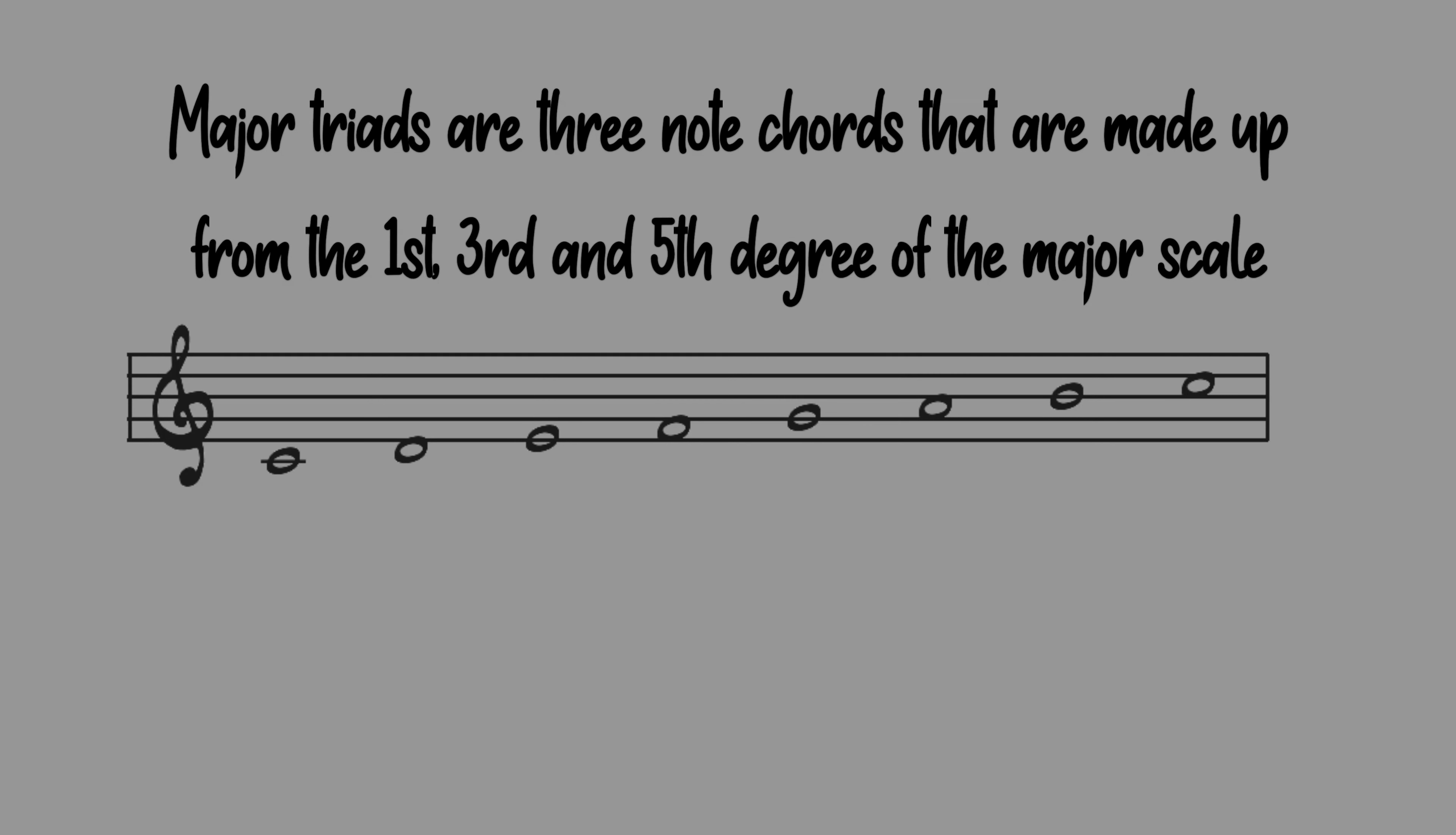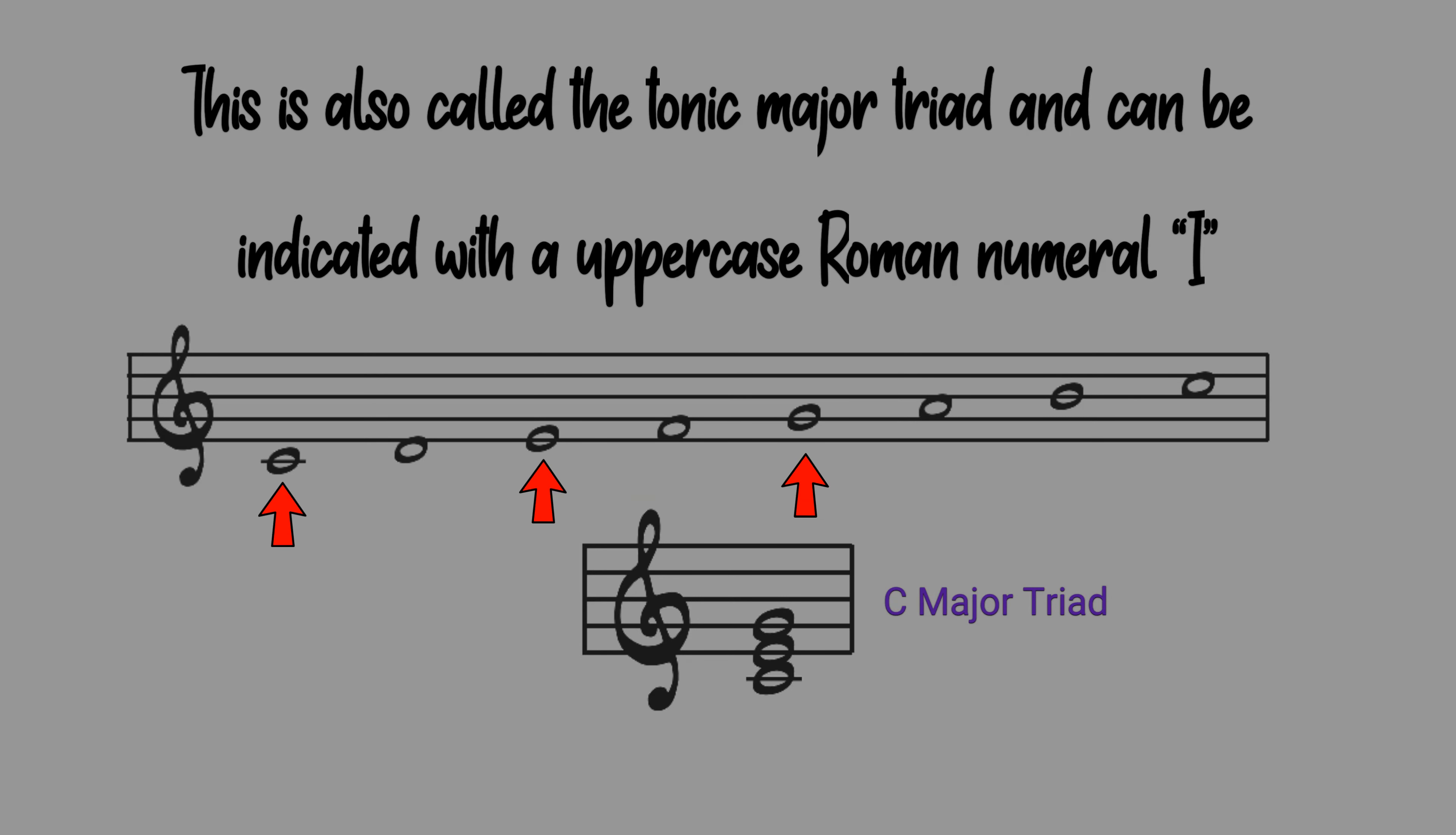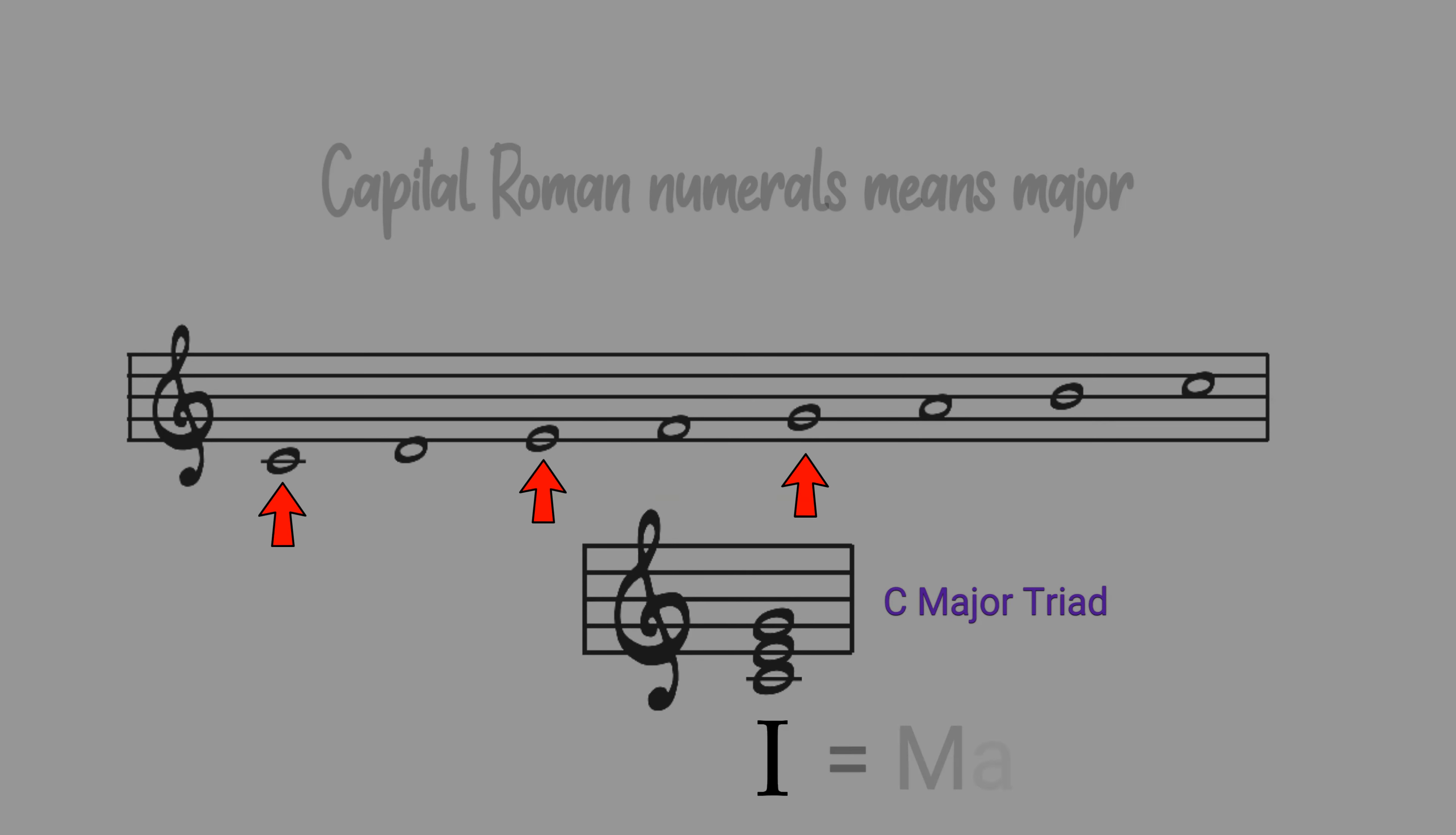Major triads are three note chords that are made up from the first, third and fifth degree of the major scale. This is a C major triad on the treble clef. This is also called the tonic major triad and can be indicated with an uppercase Roman numeral I. Capital Roman numerals mean major.